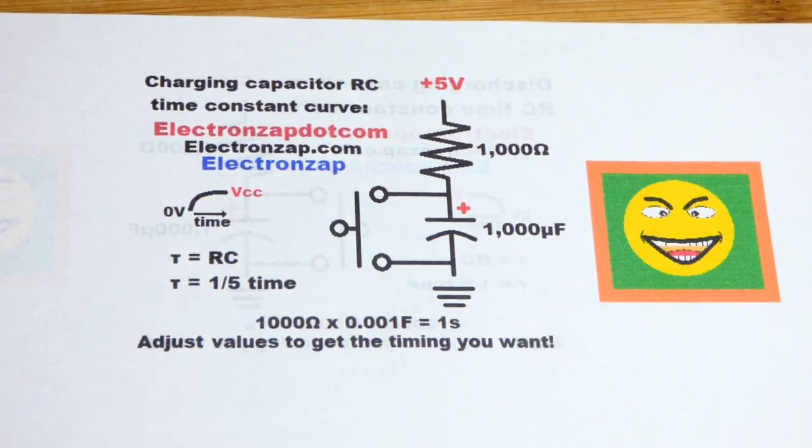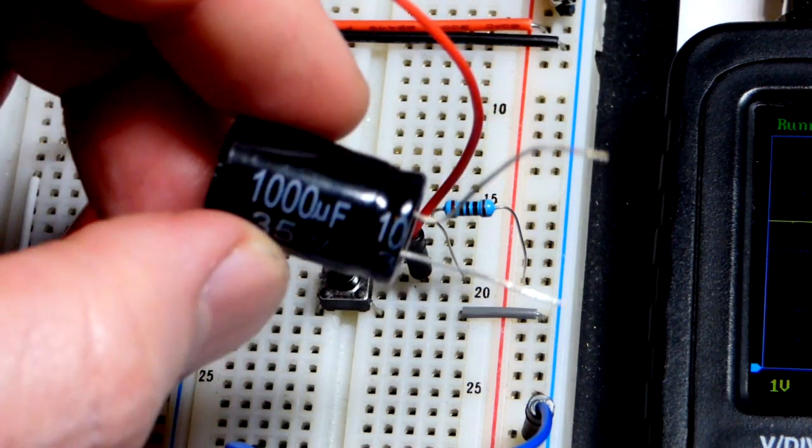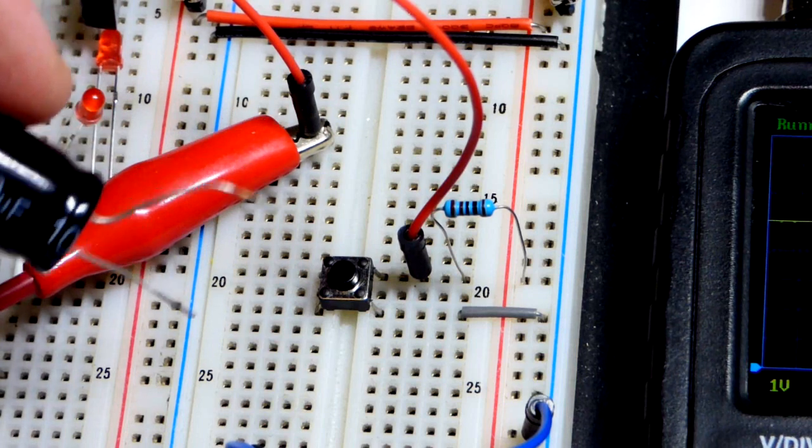So here we have the breadboard with a 1000 microfarad capacitor. We can charge it up to 35 volts, we're only going up to 5 volts in this circuit. It's polarized, we got to put the negative side there and positive side we're going to the top of the switch straight across.